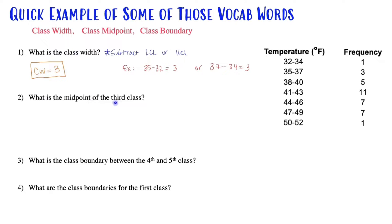What is the class midpoint of the third class? Here's another way to check the class width: if you add 3 each time, does it work? Yes, it does. And same thing over here, if you add 3 each time, does it work? Yes.